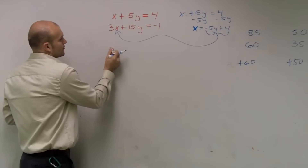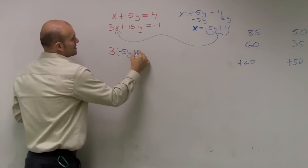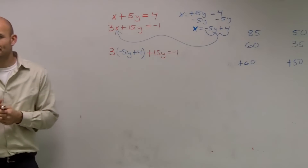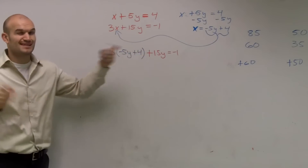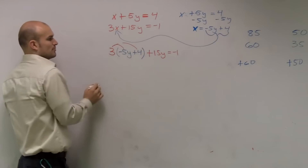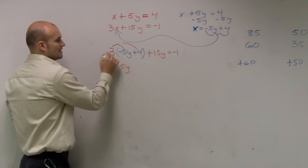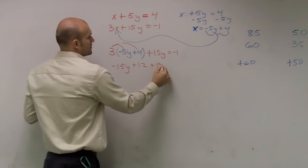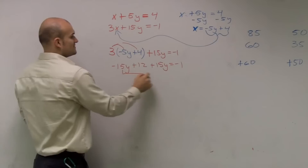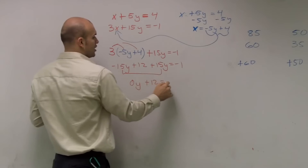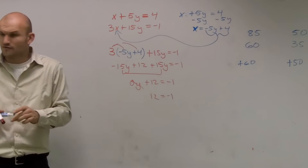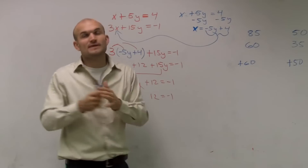So now I have 3 times the quantity negative 5y plus 4, plus 15y equals negative 1. When you substitute in, put the expression in parentheses so you remember to apply distributive property. Distributing: 3 times negative 5y is negative 15y, and 3 times 4 is positive 12, plus 15y equals negative 1. Combining like terms: negative 15y plus 15y gives 0y, so I'm left with 12 equals negative 1.